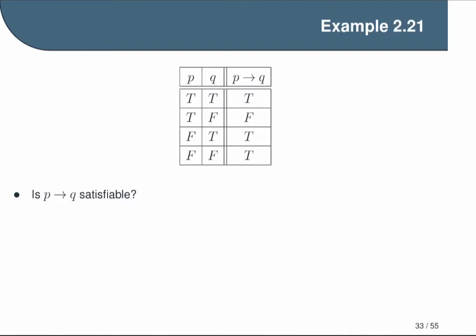A formula is satisfiable if there is any interpretation that satisfies it. Looking at the truth table, there is — in fact there are three possible assignments of p and q that cause this formula to evaluate to true. So it is certainly satisfiable. Is this formula unsatisfiable? No, that would mean there's no interpretation that satisfies it, and we just said that is not the case. In general, it is not possible for a formula to be both satisfiable and unsatisfiable because these properties are negations of each other and therefore mutually exclusive.